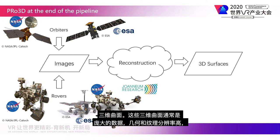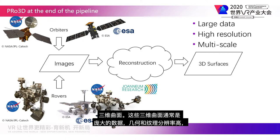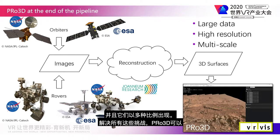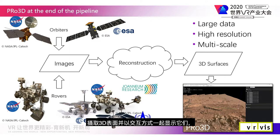These 3D surfaces are typically large data, high in the resolution of geometry and textures, and they occur in multiple scales. Addressing all these challenges, Pro3D can ingest these 3D surfaces and display them together interactively, allowing geologists to work with high-resolution surface reconstructions of the Martian surface.